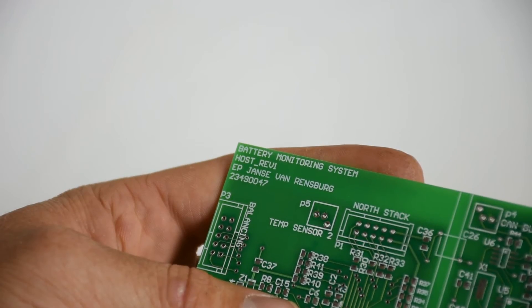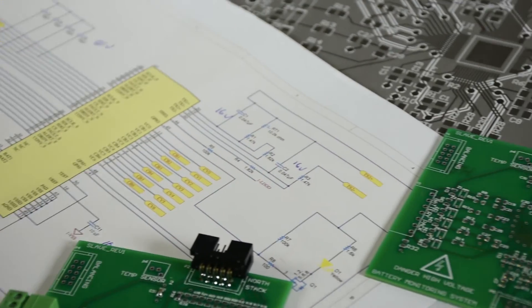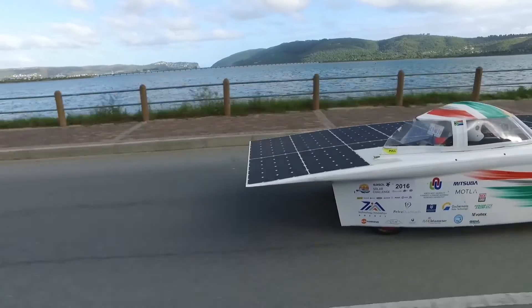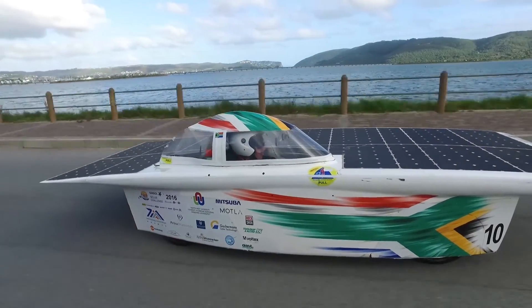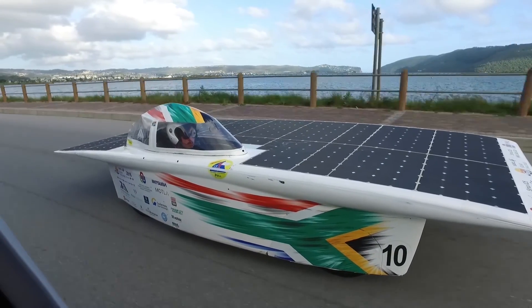This BMS is lightweight with a low energy consumption and configurable for up to 30 parallel packs. Future plans for the BMS is to be used in the next solar car that would be competing in the 2017 Bridgestone World Solar Challenge.